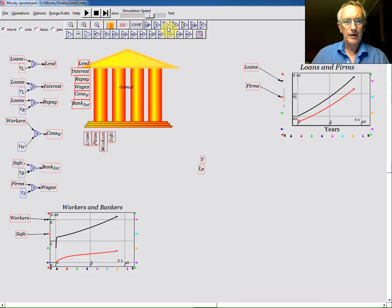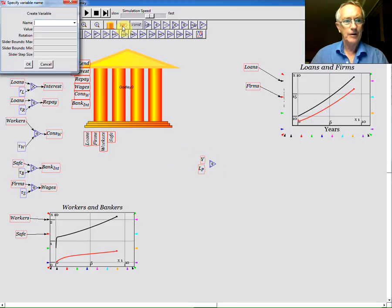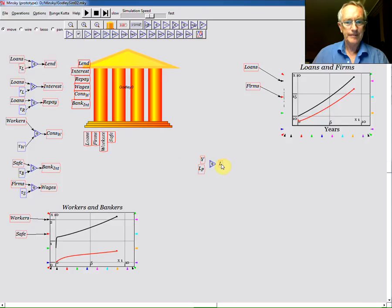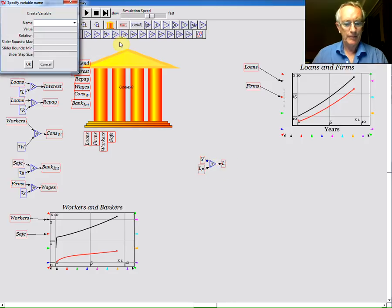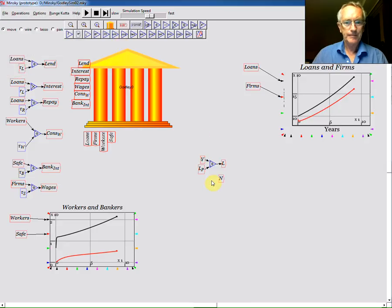If I divide output by labor productivity, I'm going to use L underscore P for labor productivity. I'm going to give it a value of one unit of output per worker. If you divide output by labor productivity, you get the number of labor, or L for labor. And then if I divide labor by population, I'll use N for population, and say you get a population of 100, 100 million effectively.